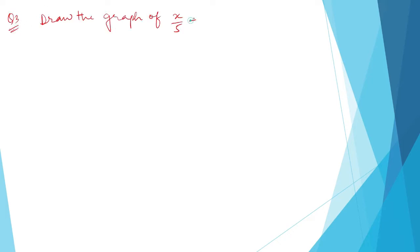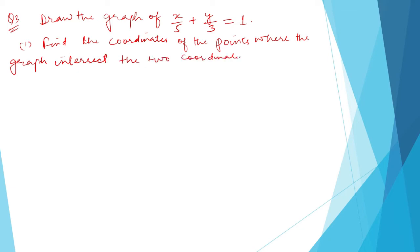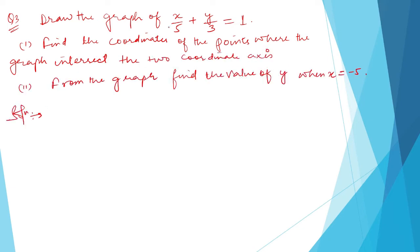Exercise 4.2, question number three. The question says: draw the graph of x divided by 5 plus y divided by 3 is equal to 1. Find the coordinates of the point where the graph intersects the two coordinate axes. From the graph, find the value of y when x is equal to minus 5.